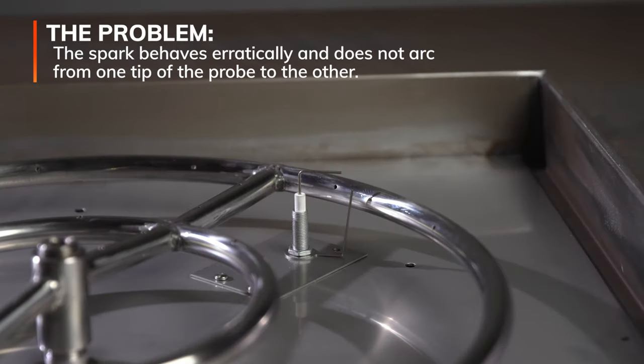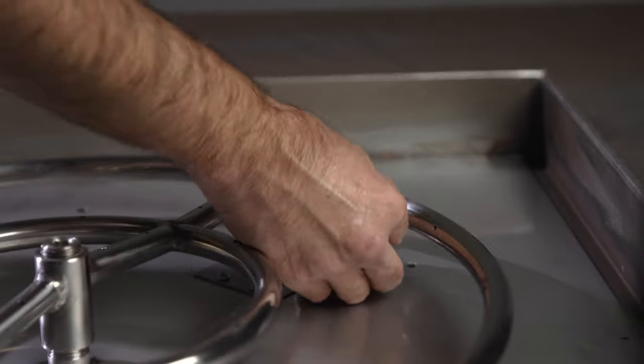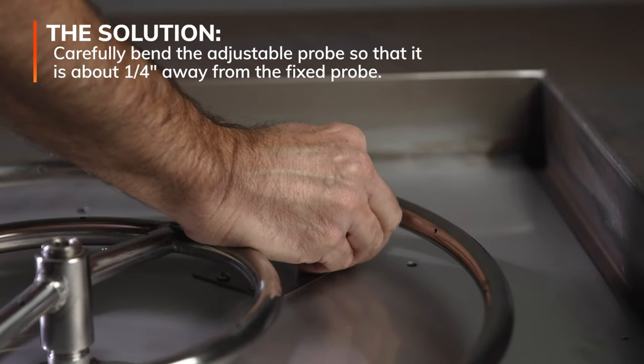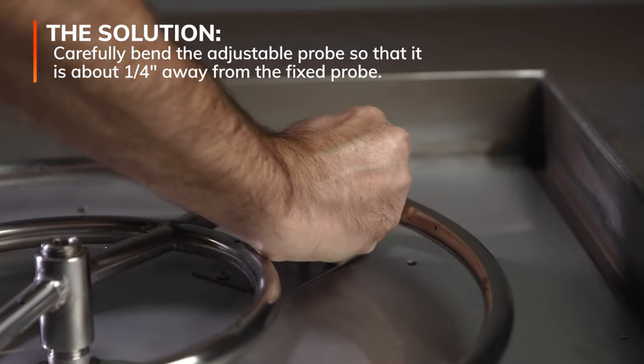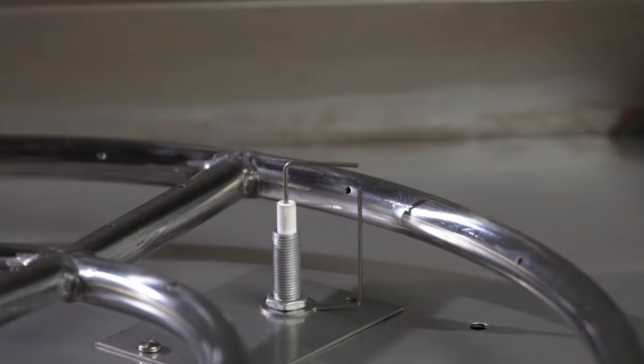When we push the spark button, you'll notice that the spark is acting erratic and is not concentrated at the tip of the probes. To solve this, simply bend the adjustable probe closer to the fixed probe. These should be approximately a quarter inch apart. Now adjusted, you can see that the spark is concentrated at the probe tips, which is exactly what we want.